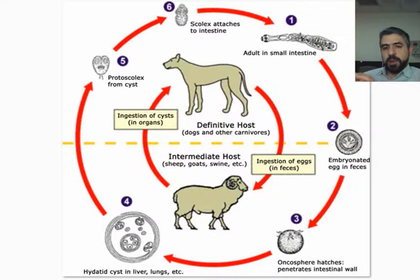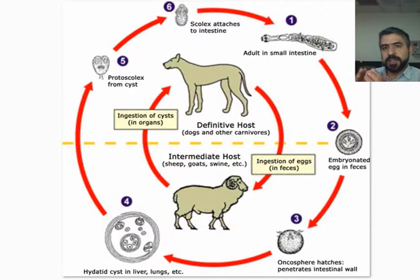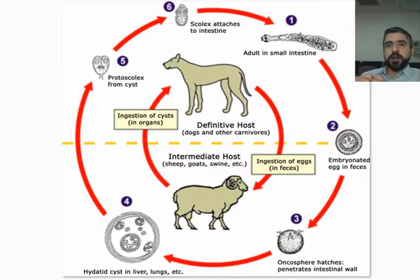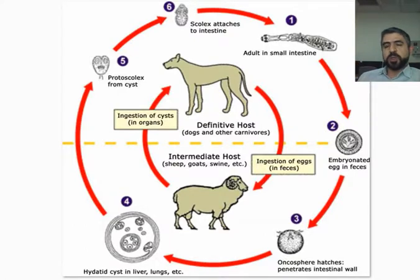What will happen is that the parasite — Echinococcus granulosus — will start forming cysts that contain the scolices of the Hydatid disease. These cysts can form practically anywhere in the body. As Professor Khalid Naji used to say, Echinococcus can occur anywhere except hair and nail. The most common location is the liver, and the second most common is the lungs.